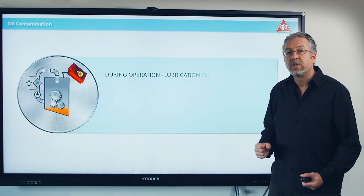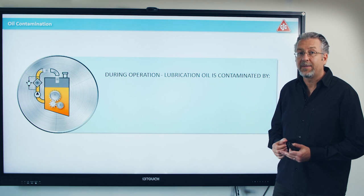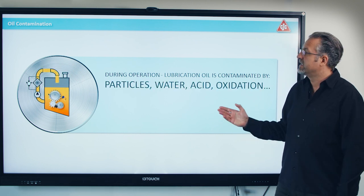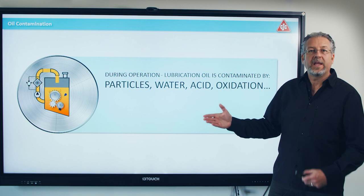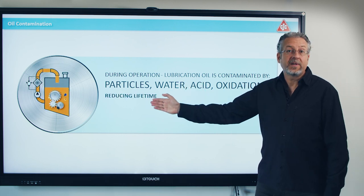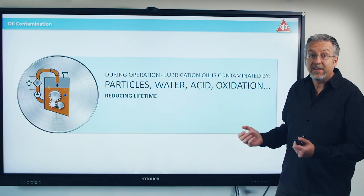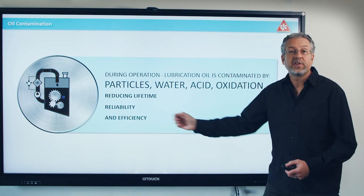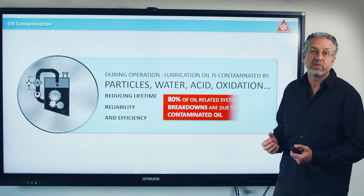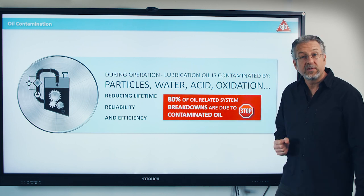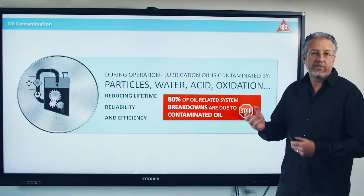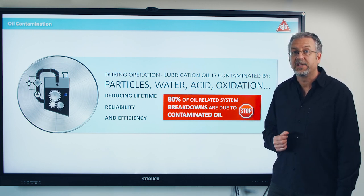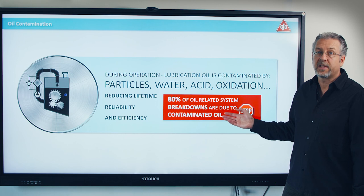When you have a machine in operation, any machine will be contaminated by particles, water, oxidation, and acidity. That means the lifetime of the machine will be reduced, and the oil will also harm the reliability and efficiency of the machine. Studies have shown that 80% of failures related to oil are actually because of contamination. So there's a lot of hidden savings here.